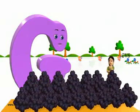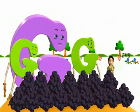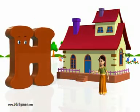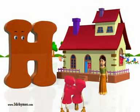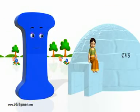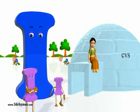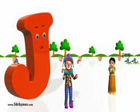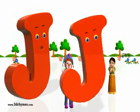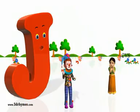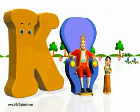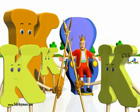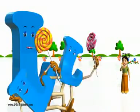G for grapes, H for house, I for igloo, J for jackal, K for king, L for lollipop.